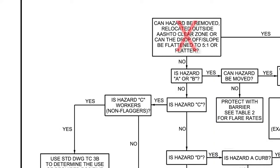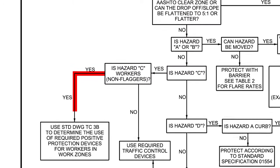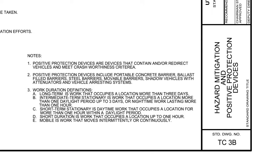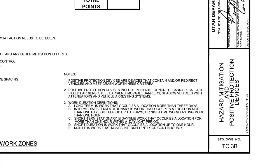You have determined that the hazard cannot be moved outside the astral clear zone and that the hazard is not a Type A or B hazard. You have determined that the hazard is a Type C hazard — workers, non-flaggers. The chart refers us to Standard Drawing TC3B to determine the use of required positive protection devices for workers in work zones. Now let's look at TC3B, hazard mitigation and positive protection devices.